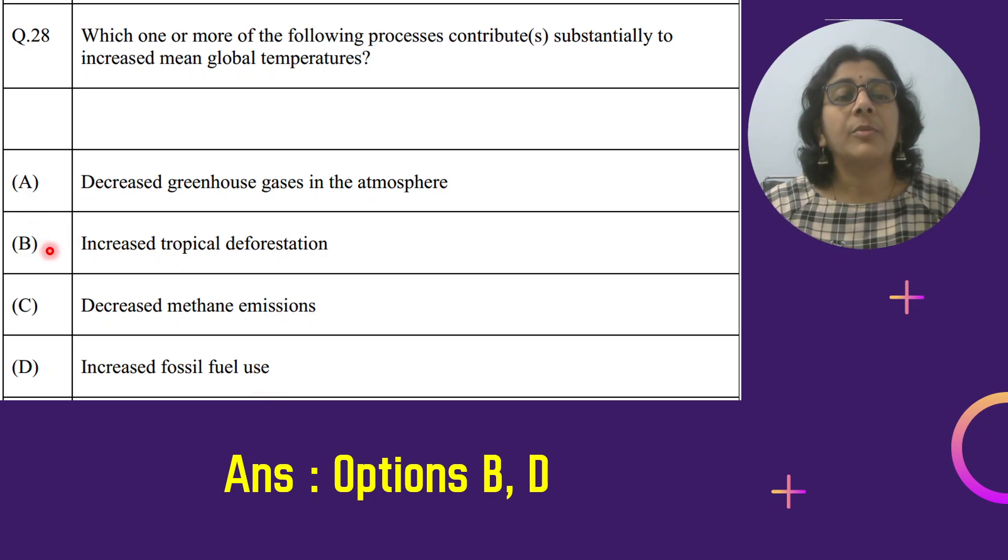Toh dekho phir yaha par option B keh raha increased tropical deforestation, ye ek reason hai. Or dusra option D, increased fossil fuel use. Ye do reason hai jiski wajah se global temperature increase hota dikha hai.